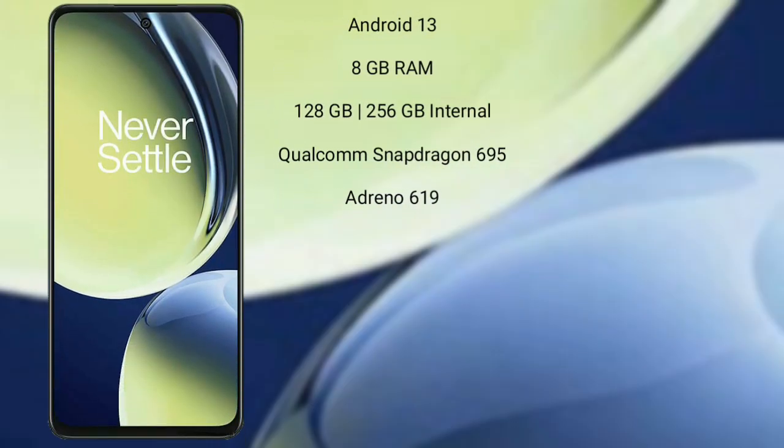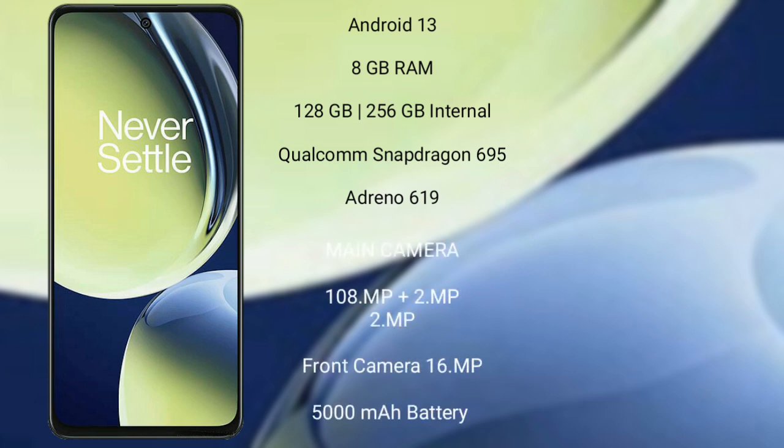The OnePlus Nord CE 3 Lite runs on the Android 13 operating system. It comes with 8GB RAM and 128GB or 256GB internal storage, powered by a Qualcomm Snapdragon 695 processor with an Adreno 619 GPU.